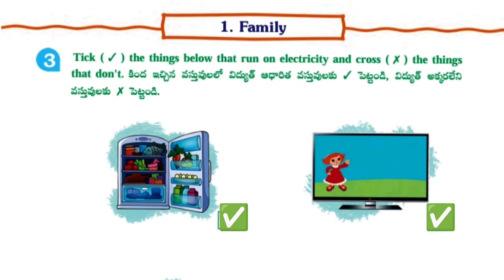Next one — Tick right the things below that run on electricity and cross wrong the things that don't. You have to tick right mark for things that work on electricity. Refrigerator — right mark, it works on electricity.